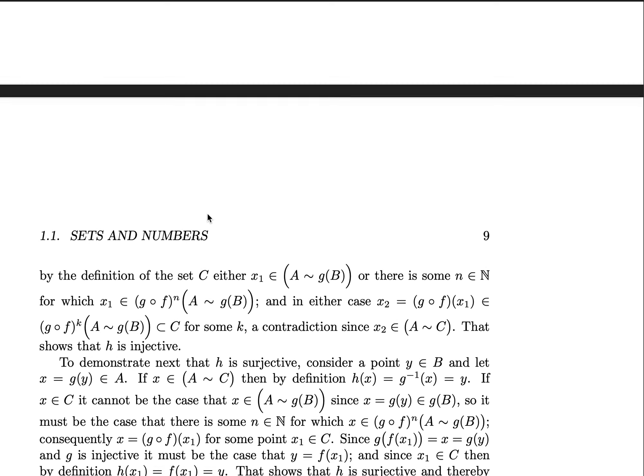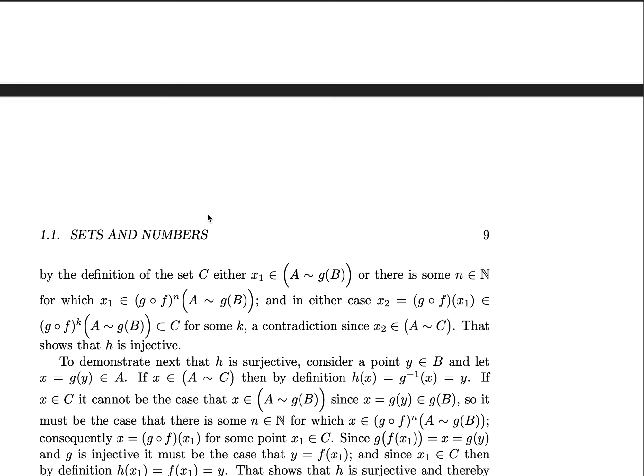then by the definition of C, either x₁ is in A except for g(B), or there's some natural number for which (g ∘ f)ⁿ, or for which x₁ is inside the set of (g ∘ f)ⁿ(A ∖ g(B)).